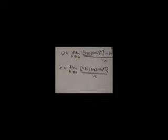The limit as h approaches zero is 490 multiplied by 2ht plus h squared, all over h.